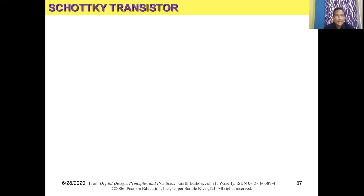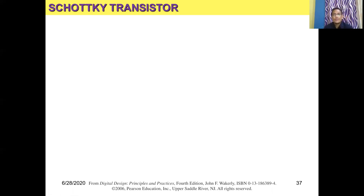The cutoff voltage is 0.2 or 0.3 depending upon which type of material is used for the construction of the Schottky transistor. This is applicable for 74LS00, 74LS32, 74LS86, and 74LS04 — all these are low power Schottky transistor ICs.